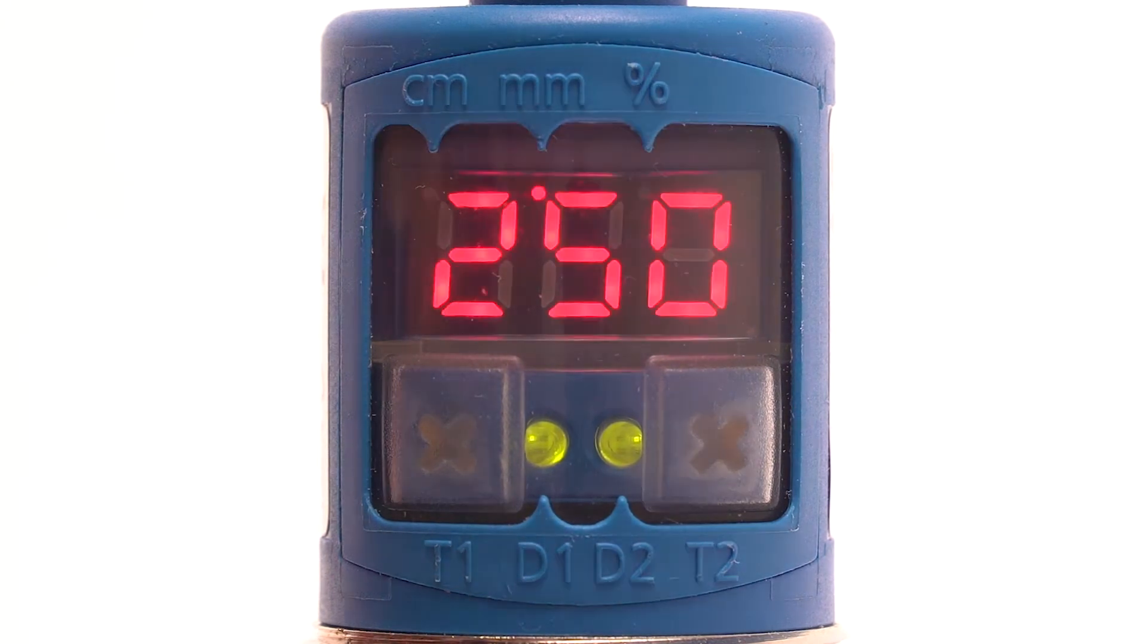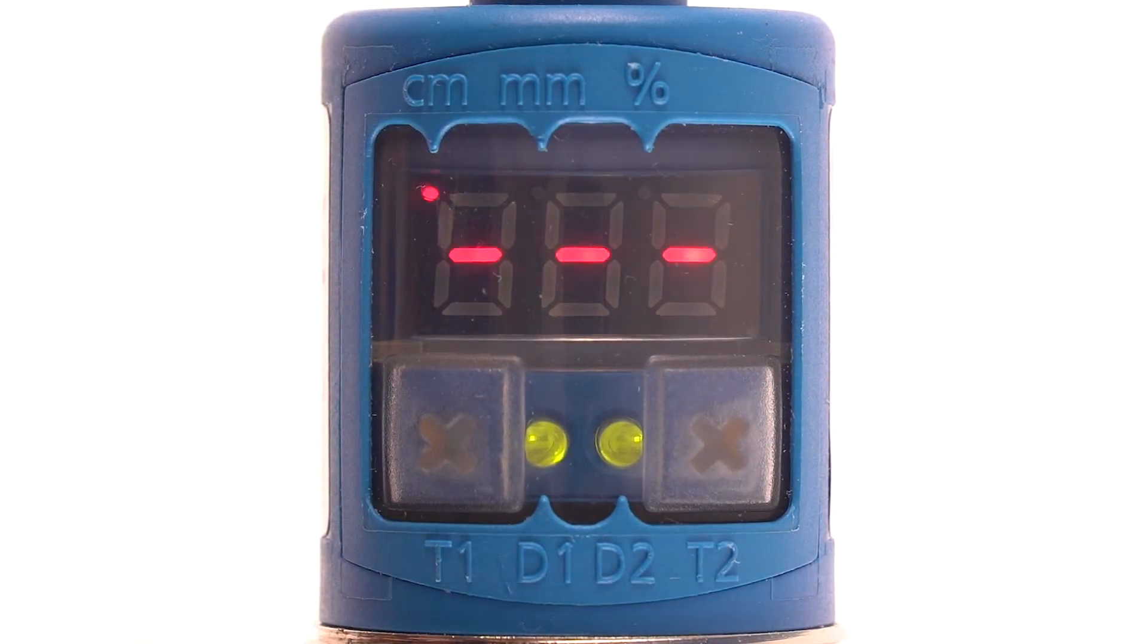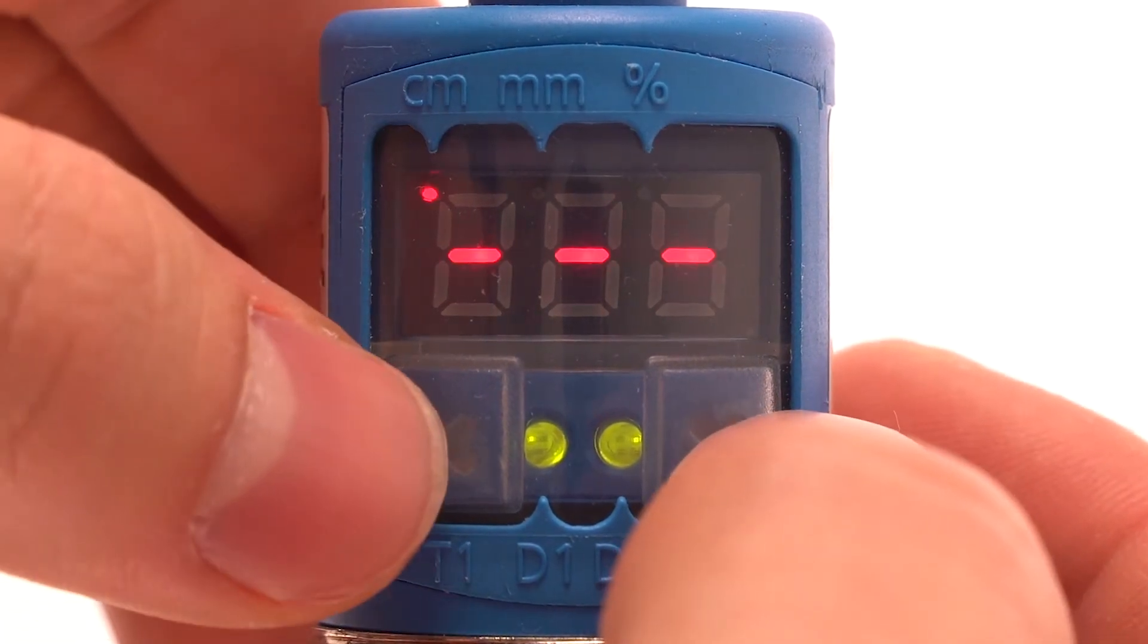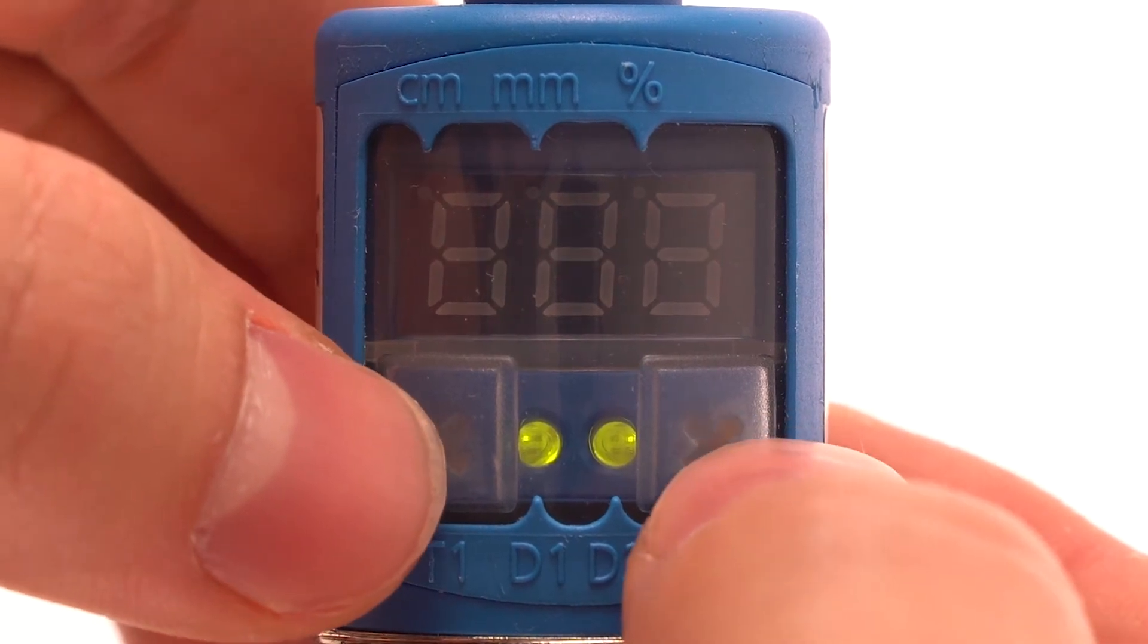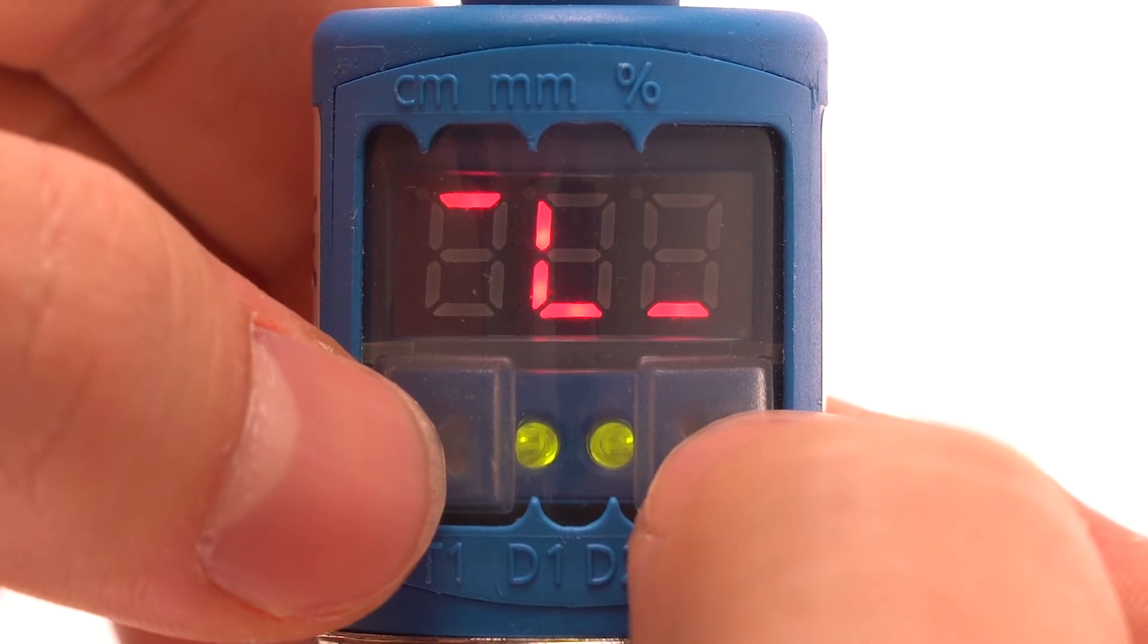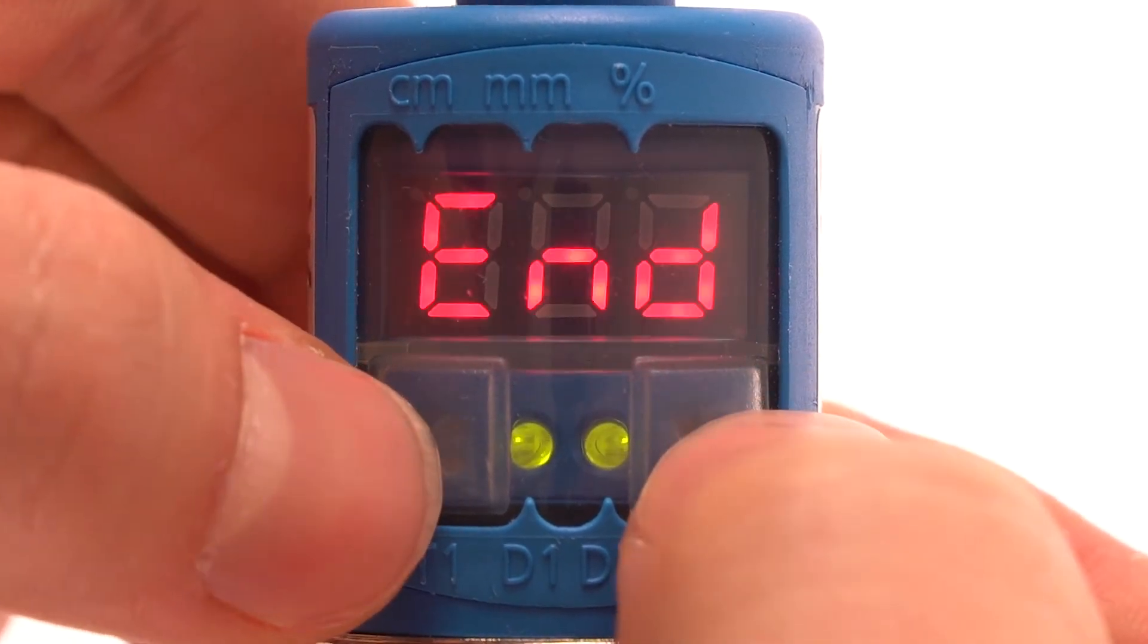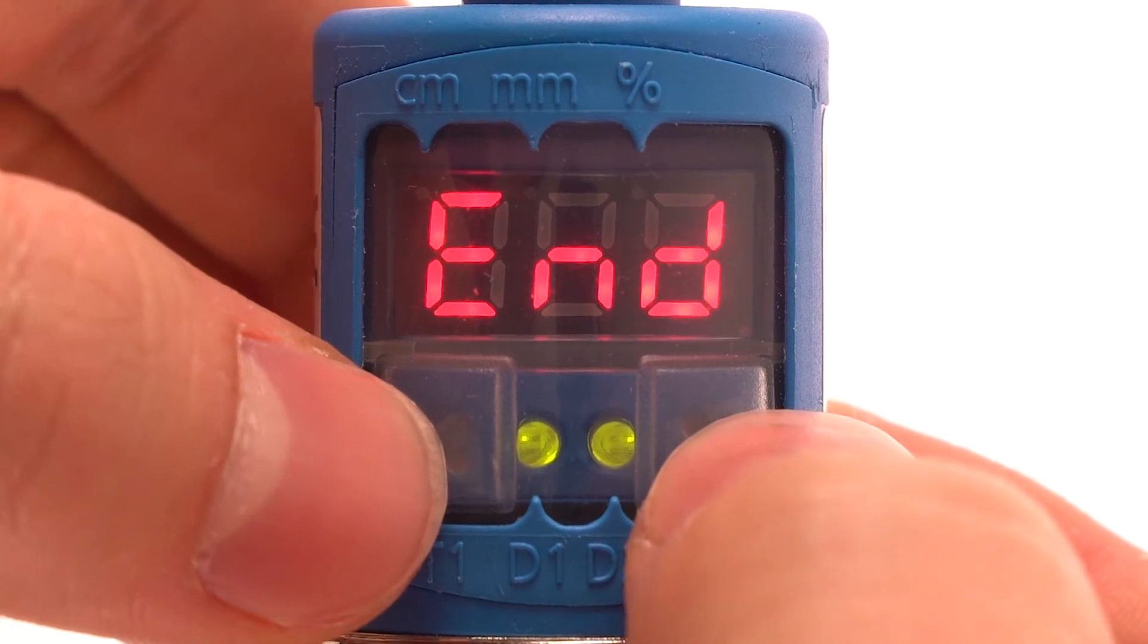Now simultaneously press T1 and T2. Three dashes appear on the display. For a simple switching point, simultaneously press T1 and T2. Select the normally closed, normally open contact. Simultaneously press T1 and T2 until end appears.